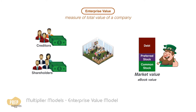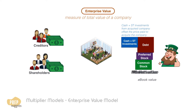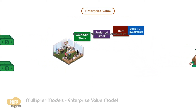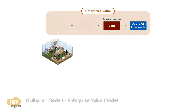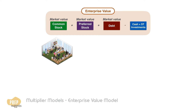However, when you acquire an entire company, you also acquire its cash and short-term investments, which are liquid. So actually, the total cost of acquiring a company is the market value of the common and preferred stock plus the market value of the debt, minus any cash and short-term investments in the company's books.